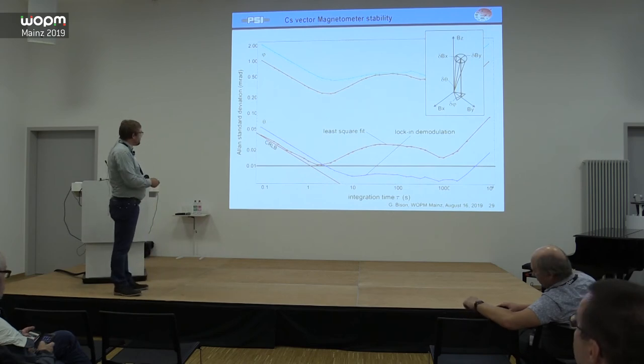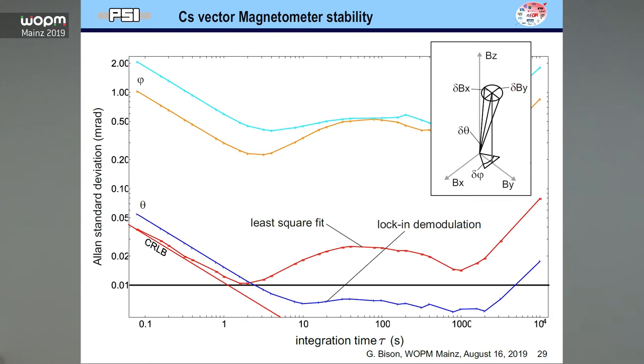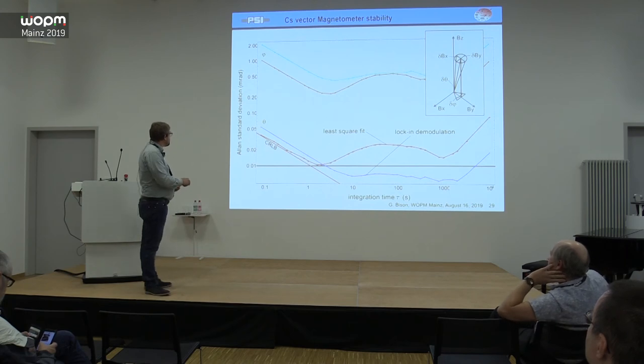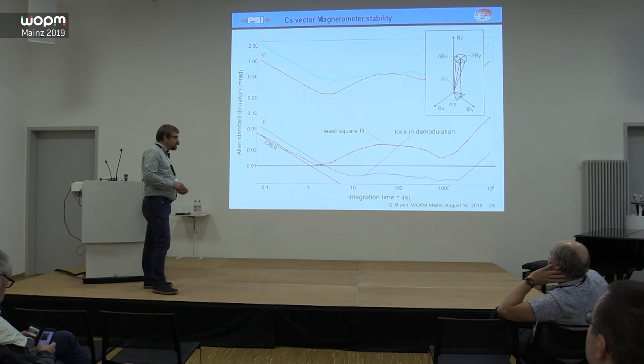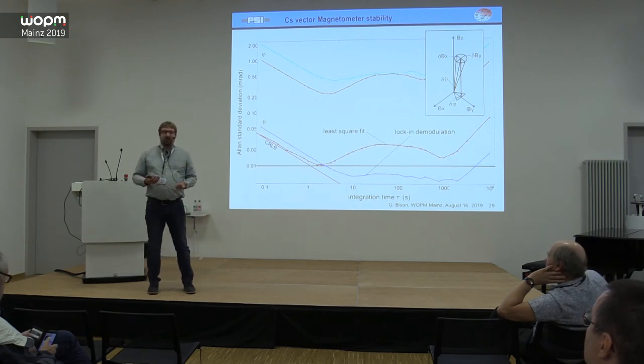So, how well does that work? This is an Allan deviation of a measurement we took in the Neutron EDM experiment at PSI. Here you see the theta and the phi angle that we extracted from the vector. Really interesting is just the theta angle because if you work close to the axis, the phi angle becomes really undefined. But the theta angle here you see if we use lock-in demodulation, we get the blue curve. If we use the least square fit, we get the red curve. The least square fit is statistically more efficient because of this filter width. We don't throw away the first precious moments of our signal. And for small integration times, that's better. But the least square fit suffers from that we cannot model our signal completely accurately. And so we have small shifts.